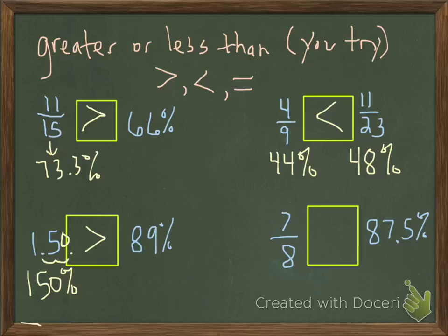Okay, now seven eighths compared to 87.5. Seven divided by eight is actually the same thing. If you did that math, you would get 87.5%. So you can say they're equal to each other. Okay. That's the end of this lesson.